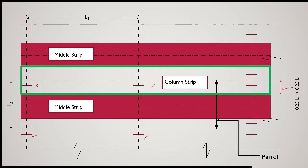Since we are designing a continuous type of flat slab, we take two panels into consideration to understand the concepts of panel, column strip, and middle strip. The green-colored area shown is a strip — its length depends on the design of the flat slab. This is the column strip, and IS456 defines how to determine the width of the column strip.